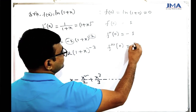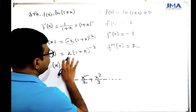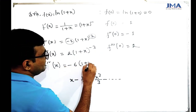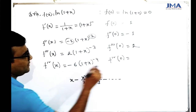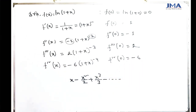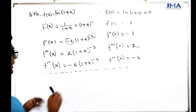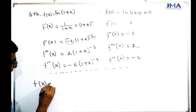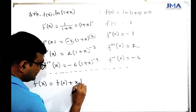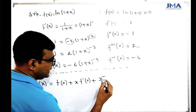So: first derivative value is 1, second derivative gives minus 1, third gives 2, fourth gives minus 6. Now drawing our full series in color: f of x equals f(0) plus x·f'(0) plus x squared by 2 factorial times f double prime of 0.